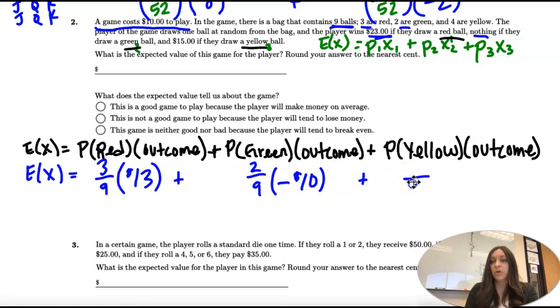Plus the probability of yellow. There are nine balls, four are yellow, so a 4 out of 9 chance. The outcome of yellow is we get $15, but we paid $10, so we only net $5.